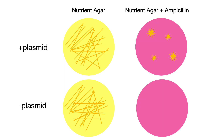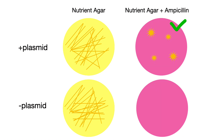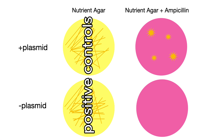On the top-left plate — plus plasmid bacteria on regular nutrient agar — there is a ton of bacterial growth everywhere. Some colonies are transformed but many are not, which is expected since there's no ampicillin to kill the untransformed ones. On the top-right treatment plate with ampicillin, all non-transformed bacteria are eliminated, so 100% of the colonies growing there have been successfully transformed. On the bottom-left, negative plasmid cells grow perfectly fine on the regular nutrient agar. But on the bottom-right ampicillin plate, no bacteria should grow at all since no plasmid was added to these cells. The two plates with full growth are considered positive controls, while the negative plasmid amp plate with no growth is the negative control.